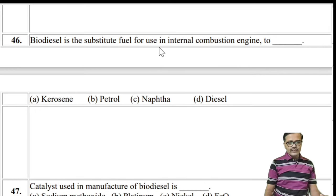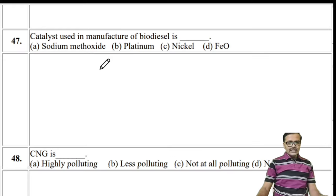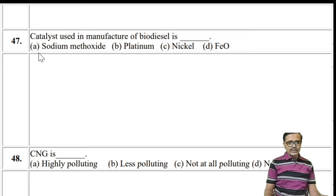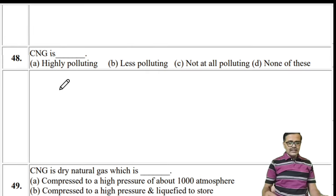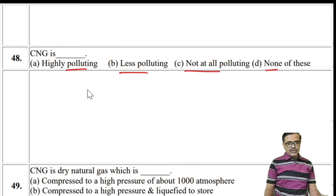Biodiesel can be substituted for diesel in IC engines. The catalyst used in manufacture of biodiesel is sodium methoxide (CH3ONa). CNG is less polluting — not highly polluting, not pollution-free — so the answer for CNG pollution is: less polluting.